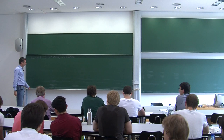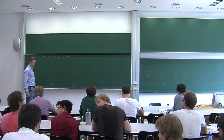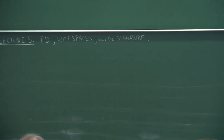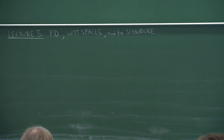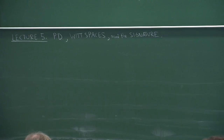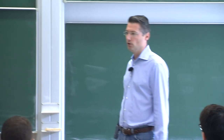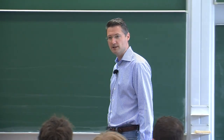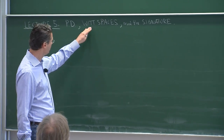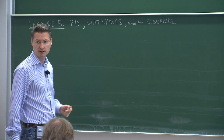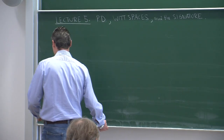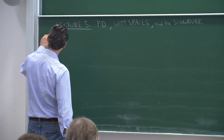I want to devote this last lecture to proving, using sheaf-theoretic methods, Poincaré duality for intersection homology groups. In the last lecture I gave a very fast introduction to sheaf theory, and we will deploy this technology today to prove Poincaré duality. Then, as time permits, the plan is to talk a little bit about Witt spaces and their signature and its properties.